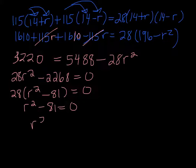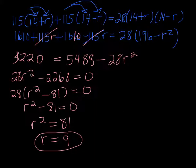Add 81 over, r squared equals 81, r must be 9. It's also negative 9, but that wouldn't make sense for this because we're talking about the rate of the current and it can't be negative. So the rate of the current is 9 miles per hour.